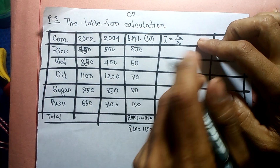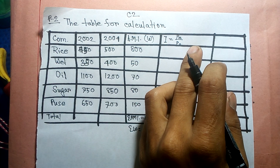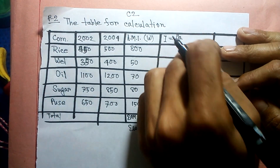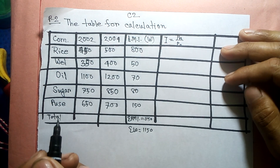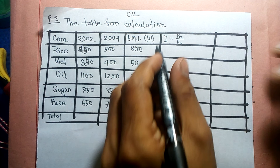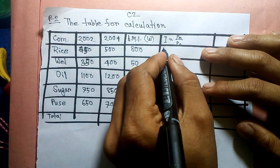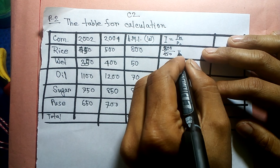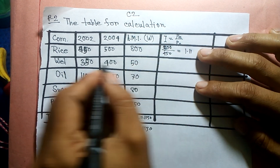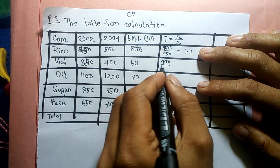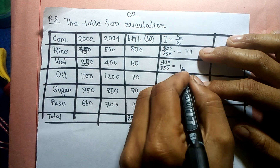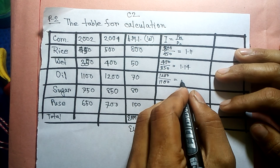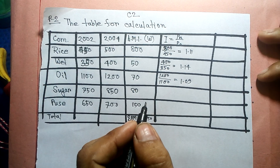We take the price new divided by price old, multiplied by 100 to get each individual price index. For rice, the calculated index value comes to 1.11. For another item it is 1.10. Going through each row, we get results of 1.09 for the next item.